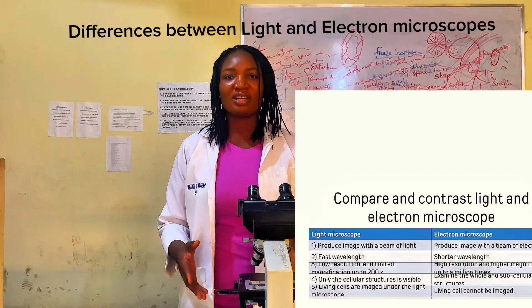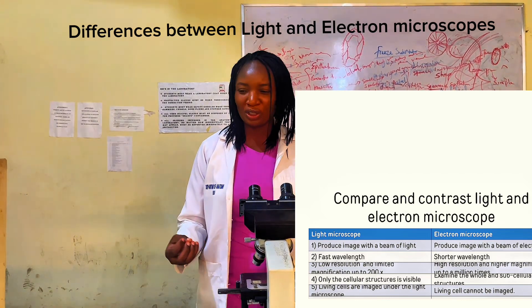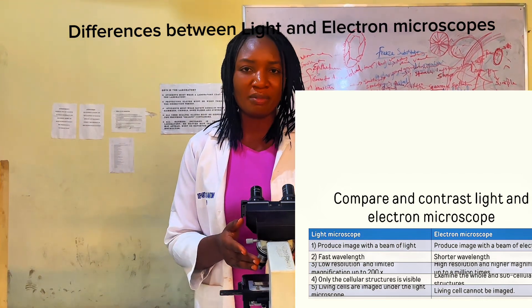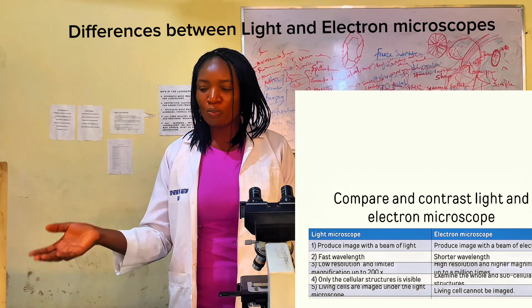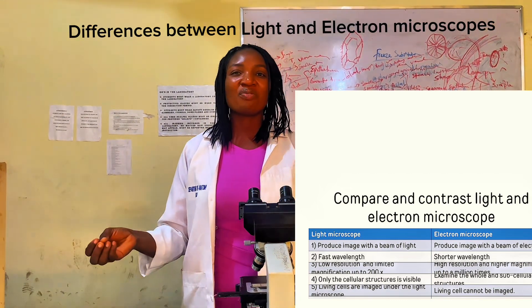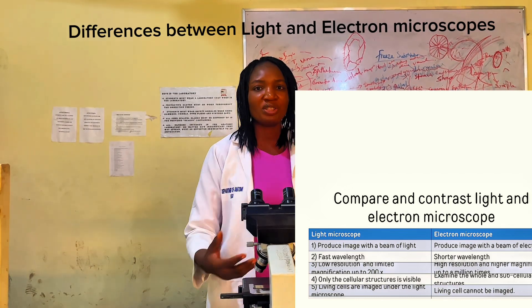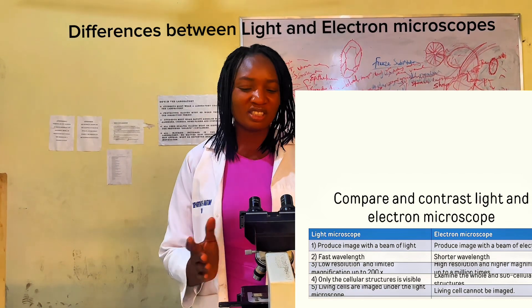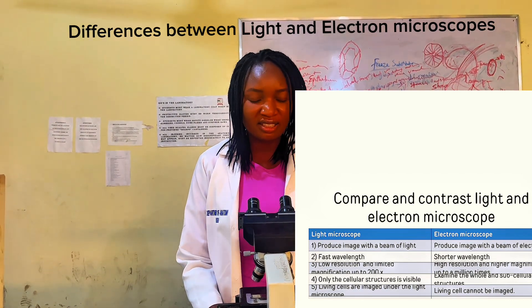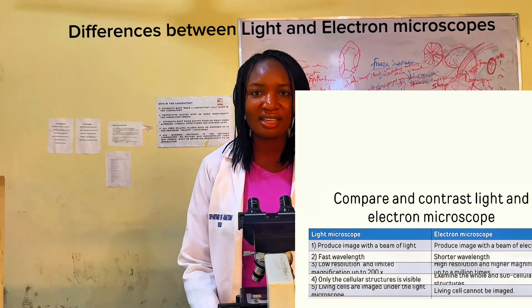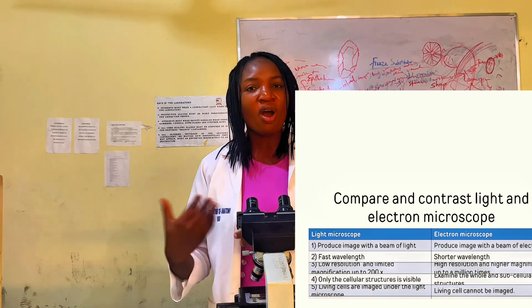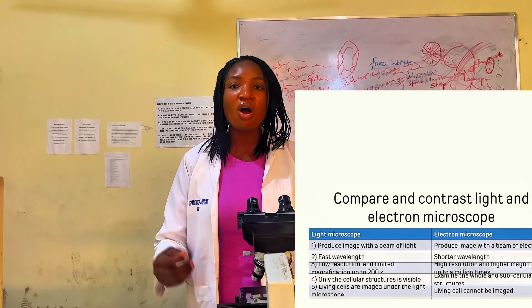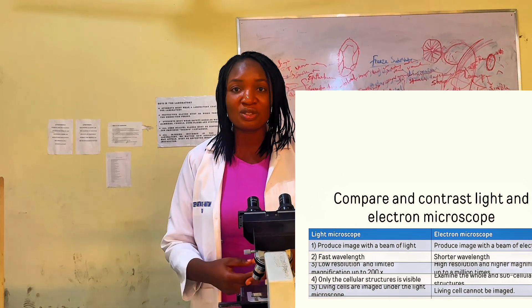Another difference is that the light microscope has a lower resolution and magnifies images up to about 200 times compared to the electron microscope, which has a high resolution and can magnify images up to a million times the original specimen. Also, only cellular structures are visible under the light microscope — you only see the cell, nucleus, and surrounding cytoplasm. Unlike the electron microscope, where even subcellular structures and all organelles can be visible.